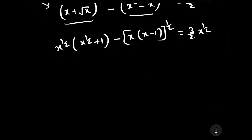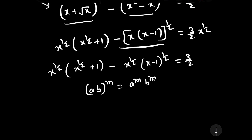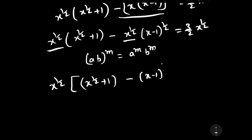This can be further written as x to the power 1/2 times (x to the power 1/2 plus 1) minus x to the power 1/2 times (x minus 1) to the power 1/2, using the formula a^m × b^m = (ab)^m. This is equal to (3/2) x to the power 1/2 times [(x to the power 1/2 plus 1) minus (x minus 1) to the power 1/2].